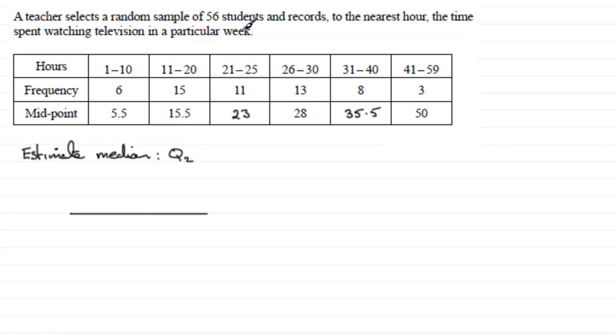Now we've got 56 students and when we're handling continuous data what we tend to do is to find the median just simply divide it by 2 to find out the position that it's going to be in. And if we divide 56 by 2 we're looking for the 28th value.